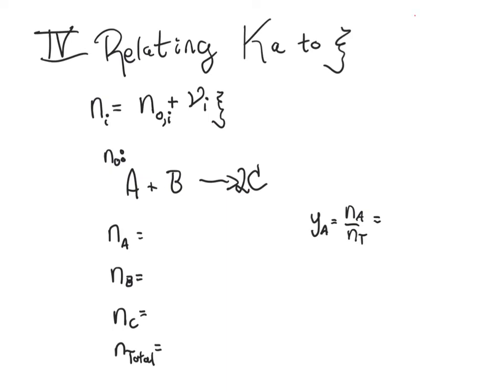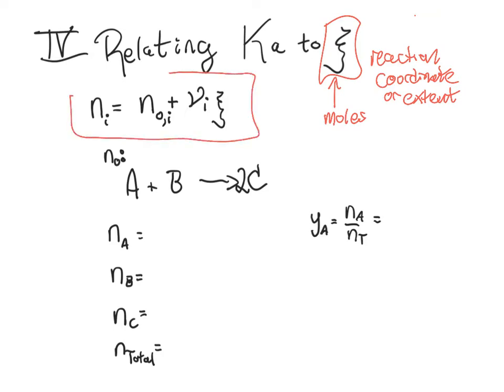So let's remind ourselves what ξ or extent of reaction, reaction coordinate, or squiggle what that was. So this is the one variable and it has units of moles that we can use to turn everything that's happening about a reaction into a one equation one unknown sort of scenario.